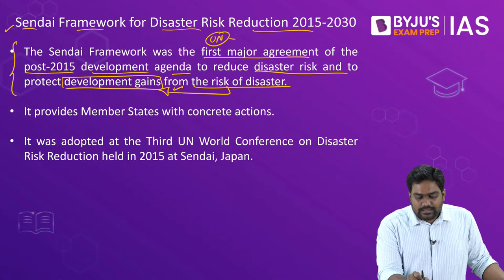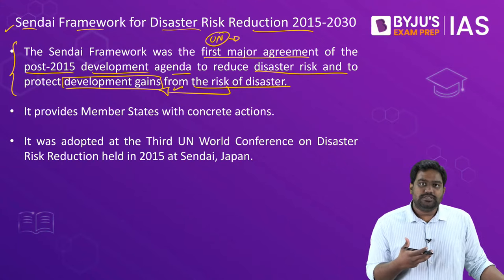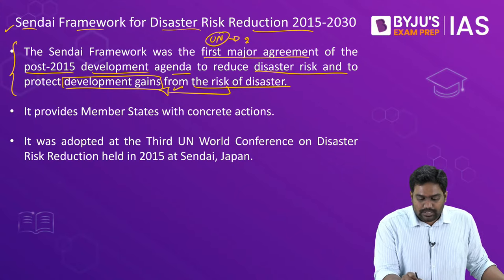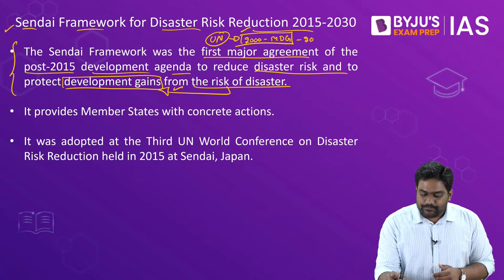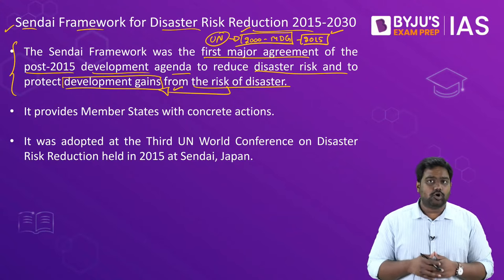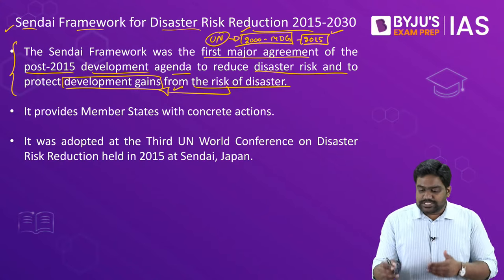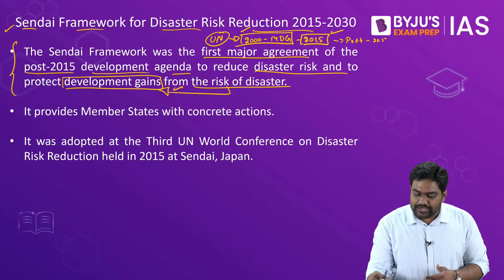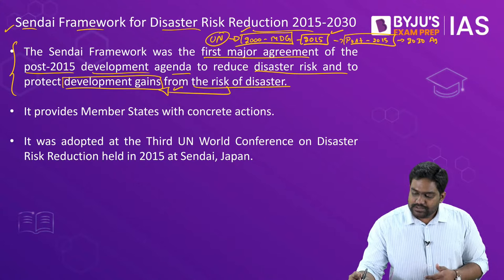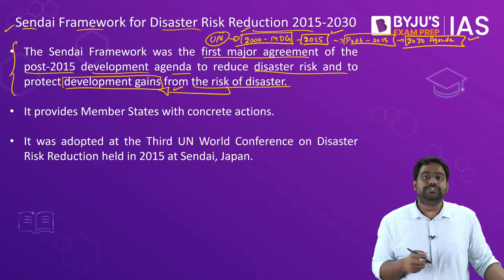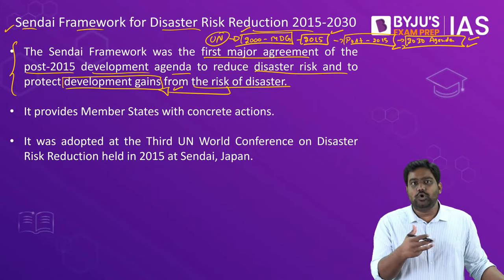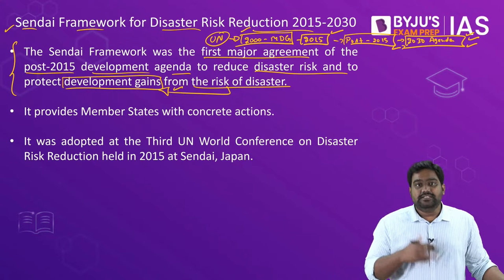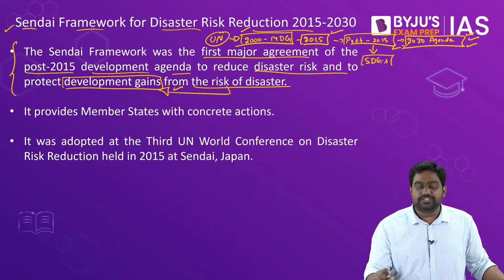Under the United Nations, developmental programs have been launched for many years. The UN brought out the Millennium Development Goals, or MDG, which was launched in the year 2000. From 2000 to 2015, the UN provided a development agenda framework called the MDG. This was later replaced with the post-2015 Development Agenda, referred to as the 2030 Agenda — essentially a global framework focused on developmental goals with specific targets and action plans to be achieved by 2030. These goals are also referred to as SDGs, the Sustainable Development Goals.